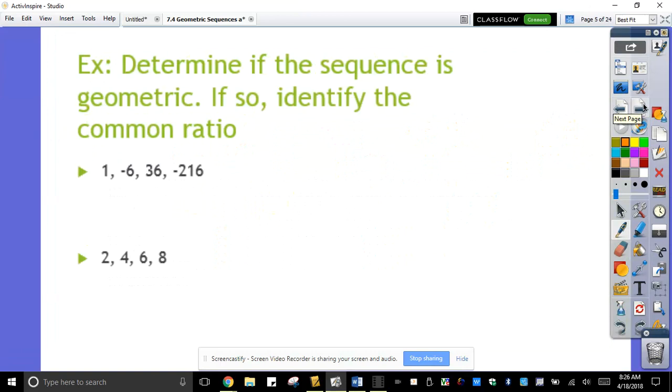Example, determine if the sequence here is geometric. 1, negative 6, 36, negative 216. What is your common ratio, which is we use r for common ratio? Therefore, the first problem here is a geometric sequence.